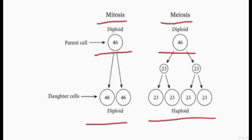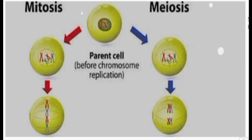If there is any mistake in mitosis, it would result in lethal diseases like cancer, tumor formation, or malfunctioning. And if there is any problem in meiosis — such as improper segregation of chromosomes or unequal distribution of chromosomes in each daughter cell — it would also result in serious physical and mental disorders.